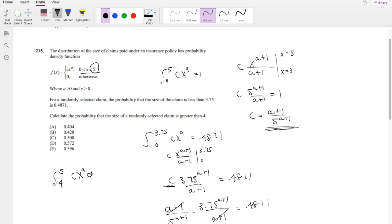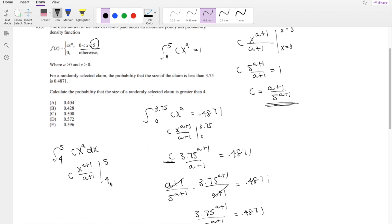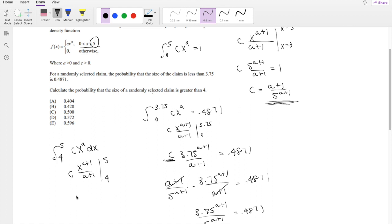So then when you evaluate it, when you take the anti-derivative in terms of x, you know this is going to be c times x^(a+1) over (a+1), evaluating from 4 to 5. Okay, so when I plug it in, (a+1) is a constant, I'm just going to throw it out.